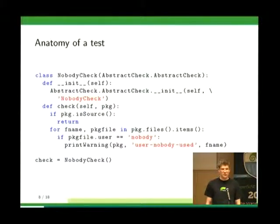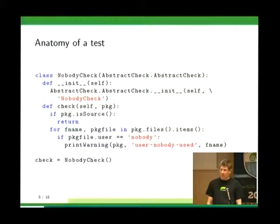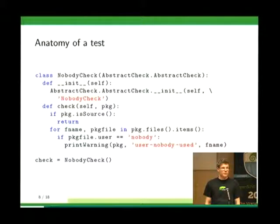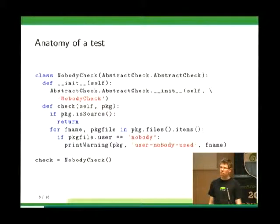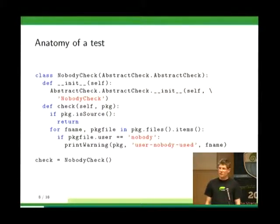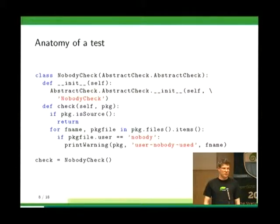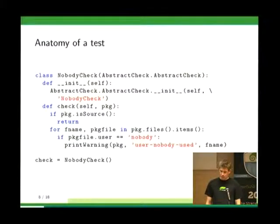In the first line, you create a class that inherits from the abstract check, which does all the hard work. You just call the constructor and tell it the name of your check. The actual check code is in the check function, which gets the package object as a parameter that abstracts the package. It has useful methods — for example the isSource function. For checking the nobody user we don't need to check source RPMs, so we ask the package if it's a source RPM and return if it is.